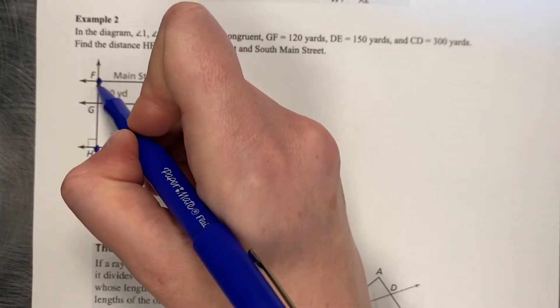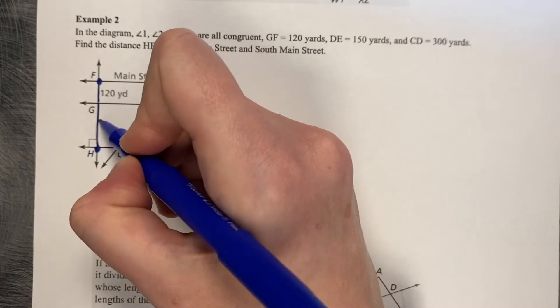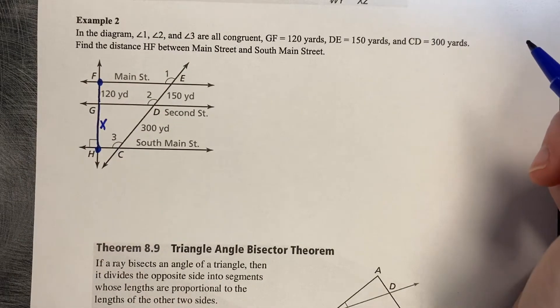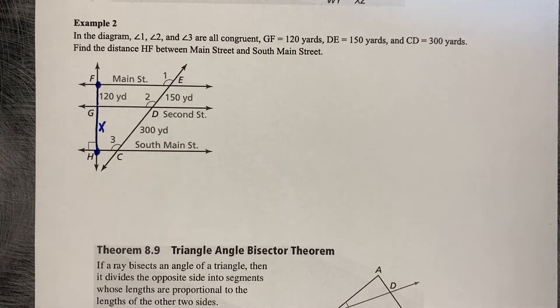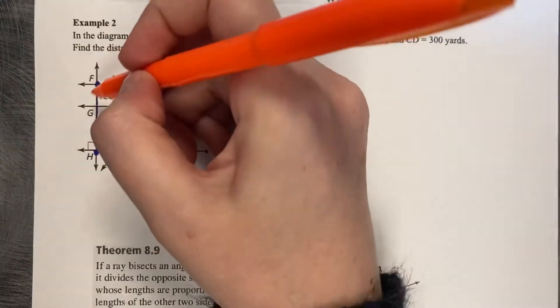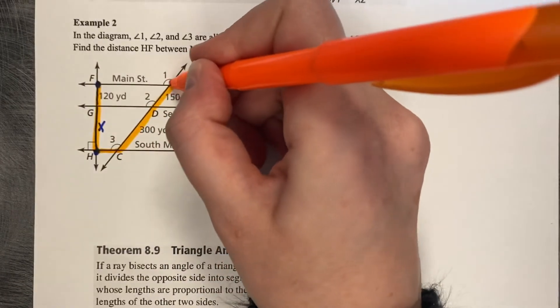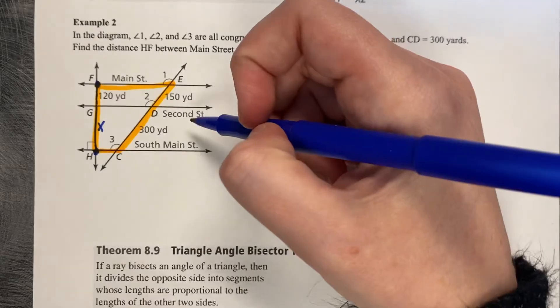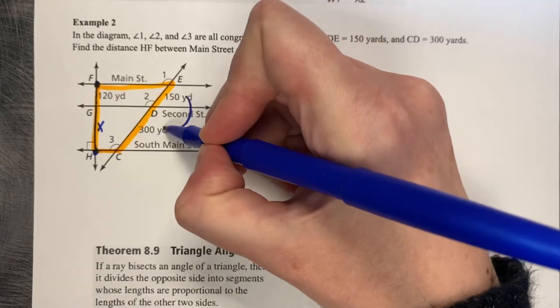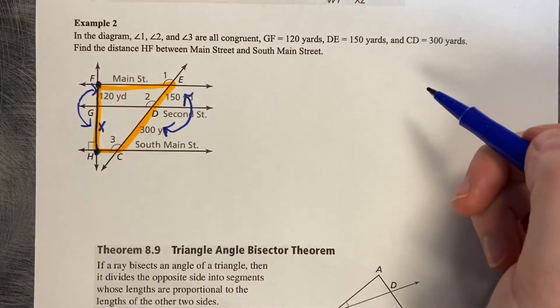We know a chunk of it already is 120, but we'd like to know the length of G to H to finish this problem. The inside portion of this diagram is F to H, H to C, C to E, and E to F. That means that 150 corresponds to 300 and 120 corresponds to X.